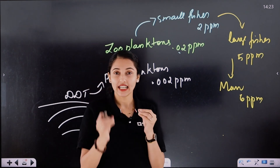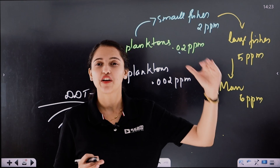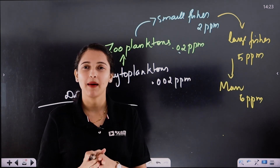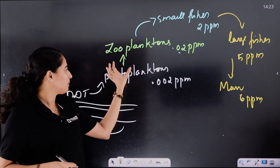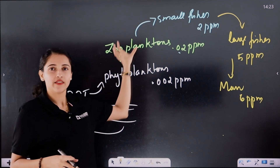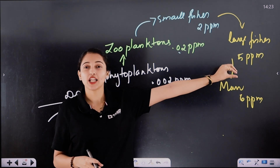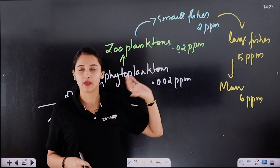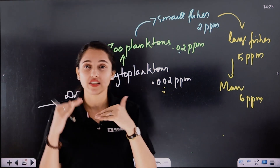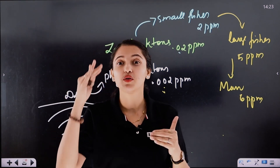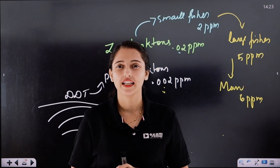The increase in the concentration of toxicant at successive trophic levels is called biological magnification. This is not the primary trophic level — this is the primary, secondary, and tertiary. As we go to the last trophic level, the concentration of the chemical toxicant becomes higher.